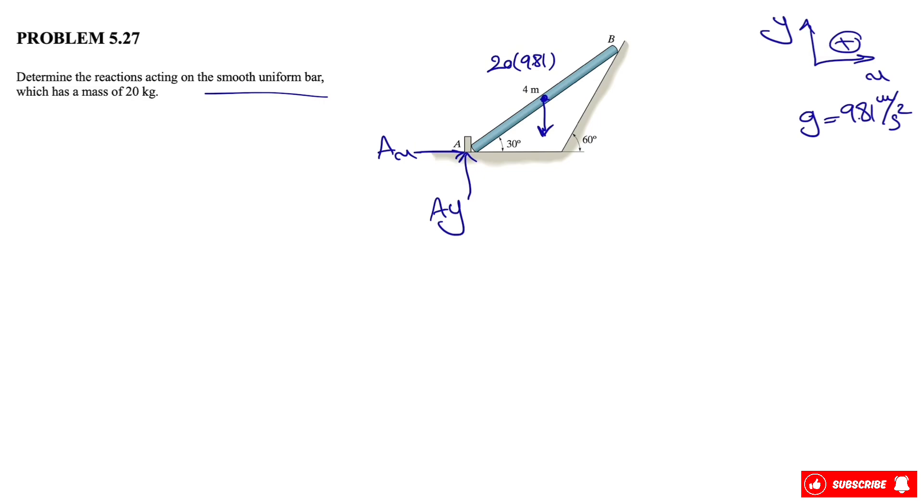And we have kind of a rocker support at point B, which means the only force that we have would be the normal force at point B. And we don't have any moments, so we are good to go to start with everything. But before that, let's just figure out the angles that we have in this question.